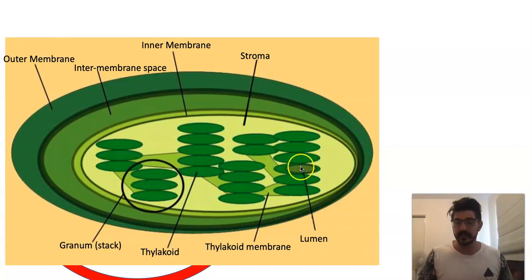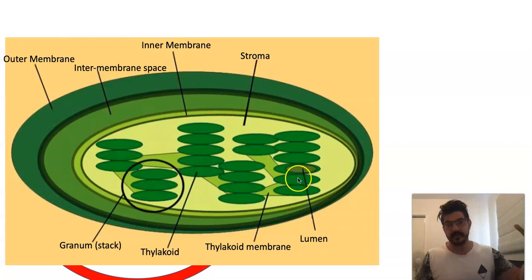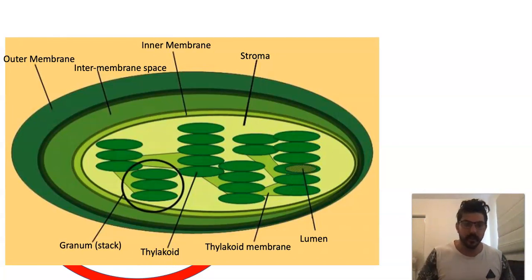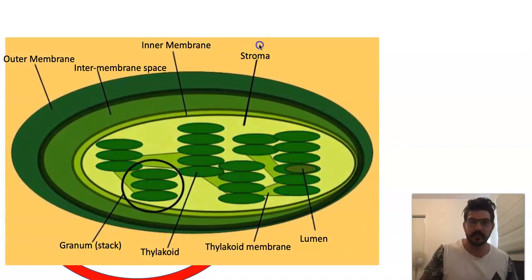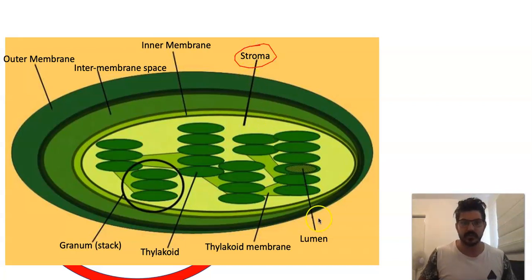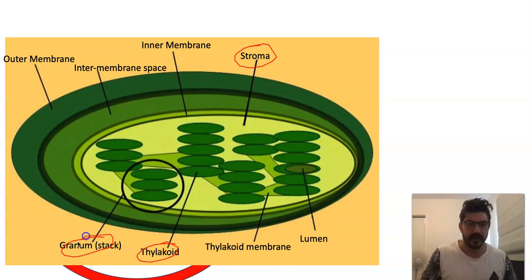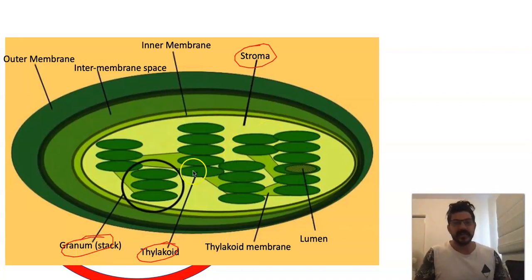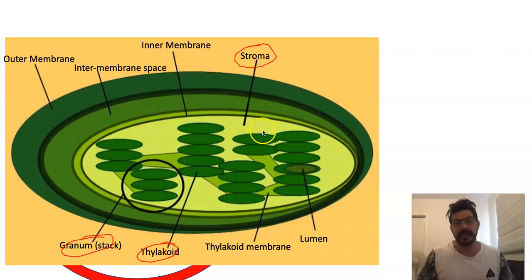There are a lot of different terms that you need to get into the brain, but most importantly — particularly if you're a Year 11 student — the things you should focus on most are the stroma, thylakoid, granum, and of course the general structure. But these three are the most important when we're talking about the Year 11 content knowledge.